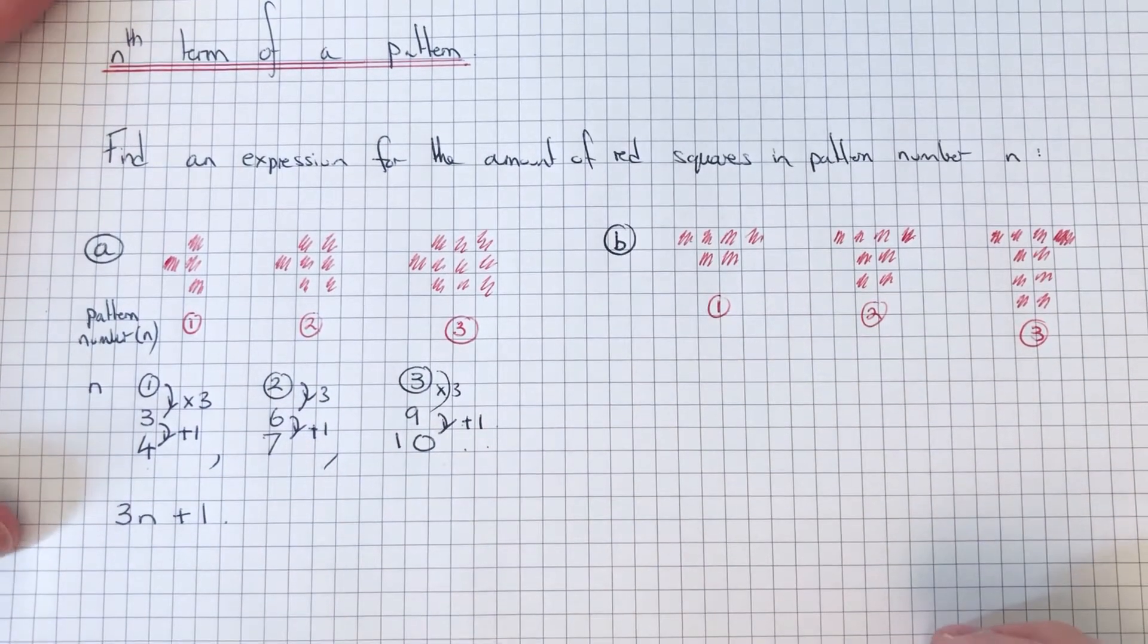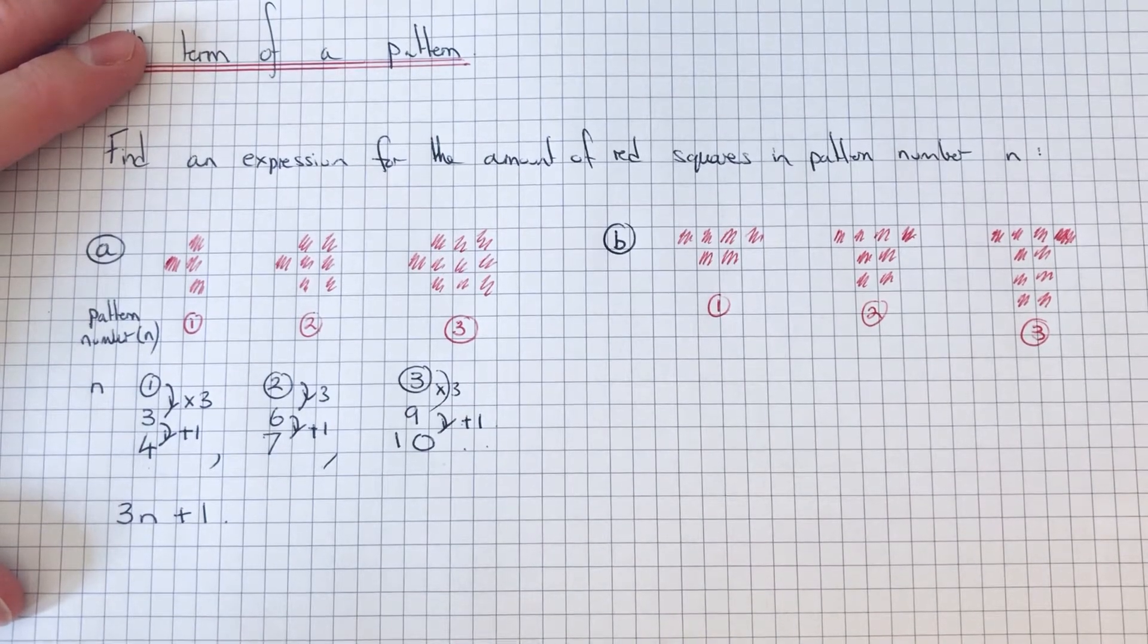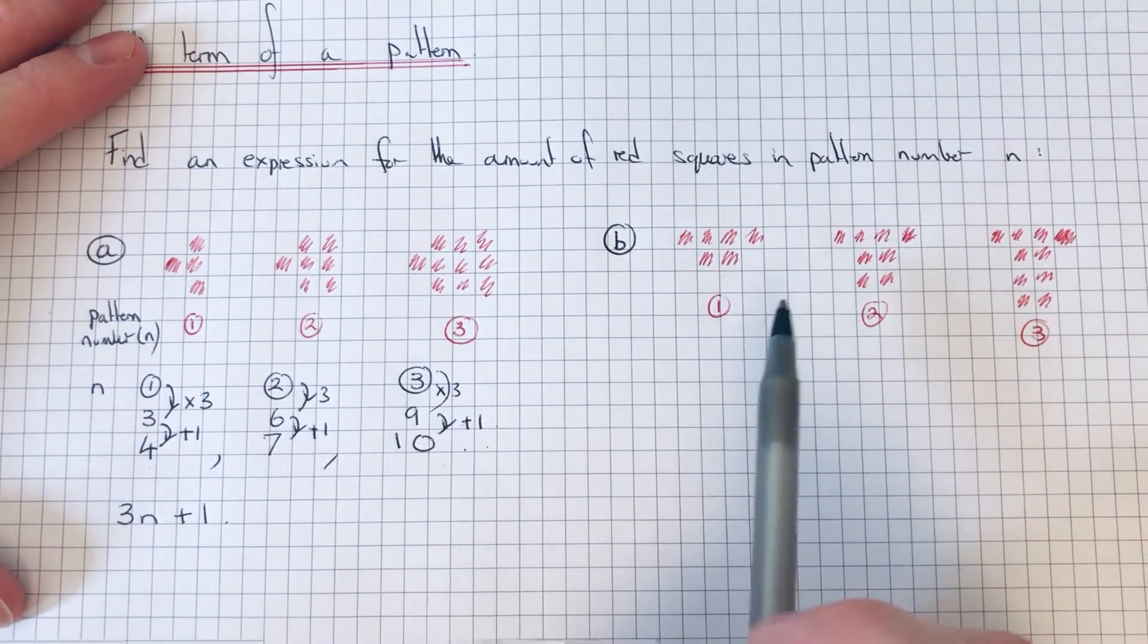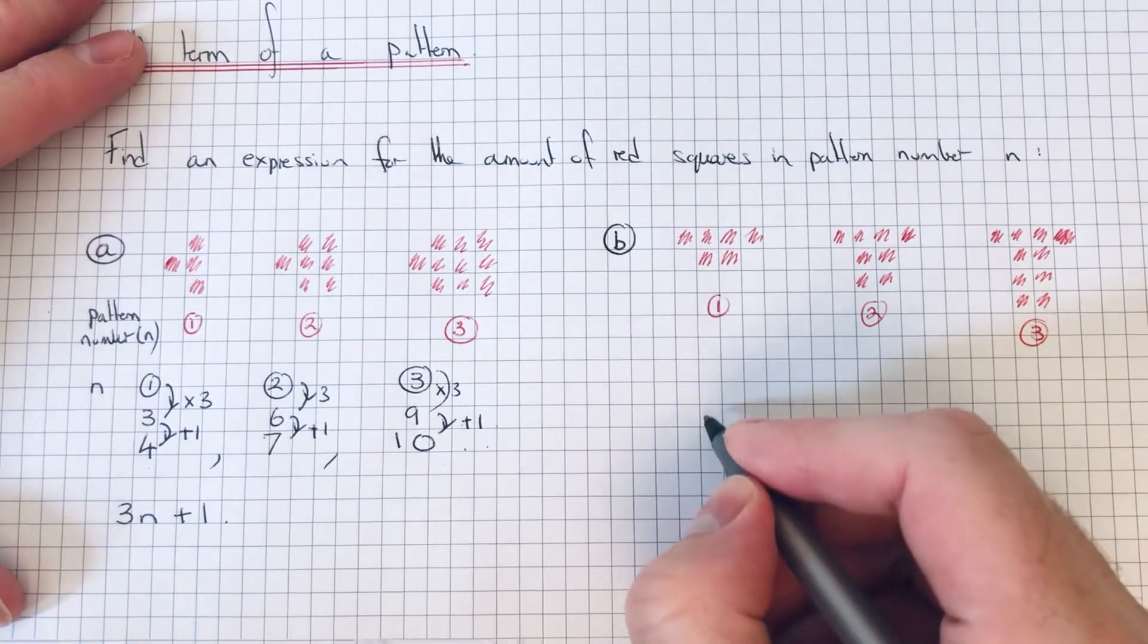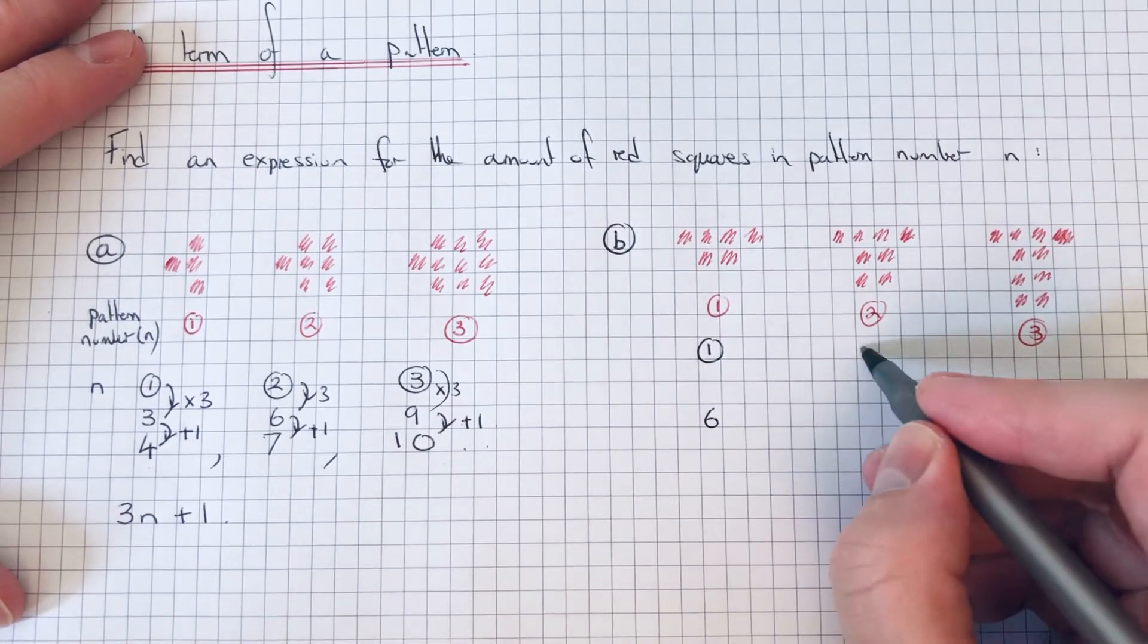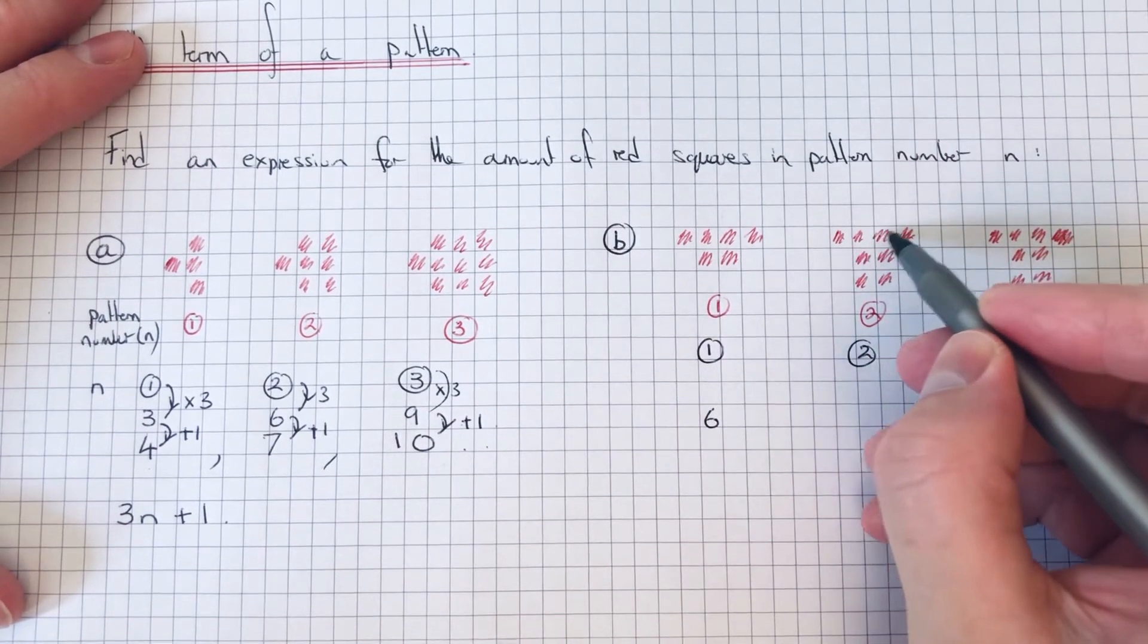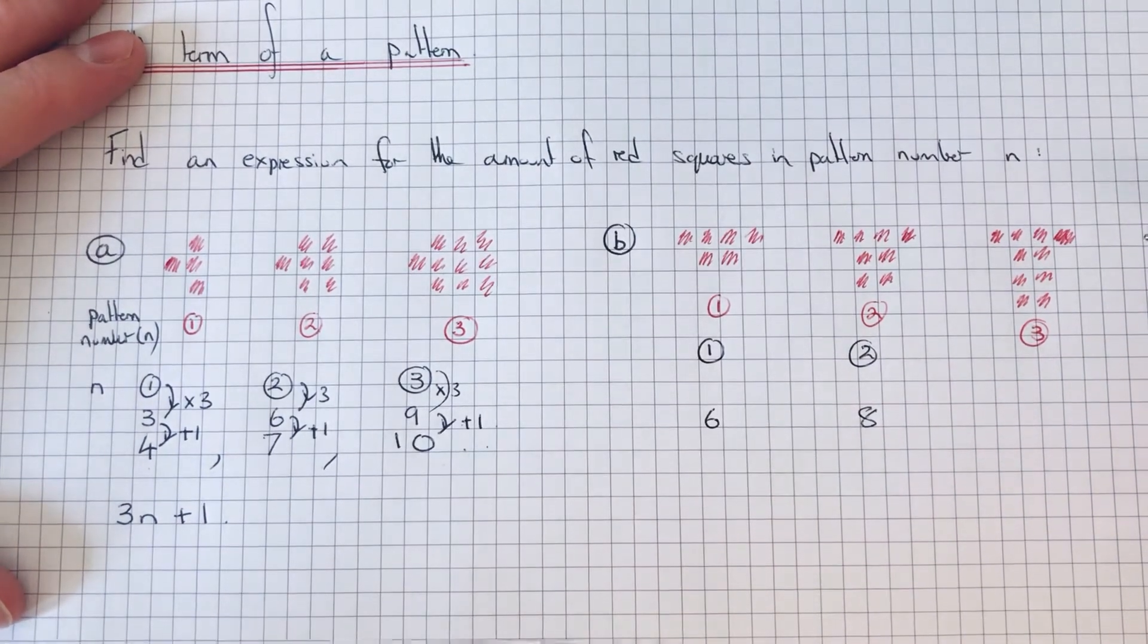Let's have a look at the second example. First of all, we're going to count how many squares we've got in each pattern. So we have 6 in the first pattern, in the second pattern we've got 8, and in the third pattern we've got 10.